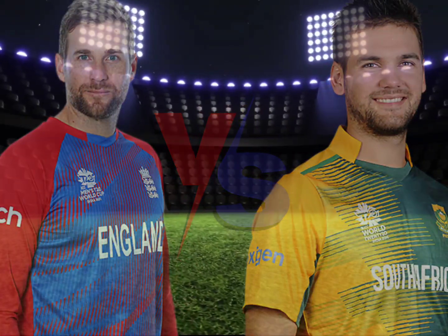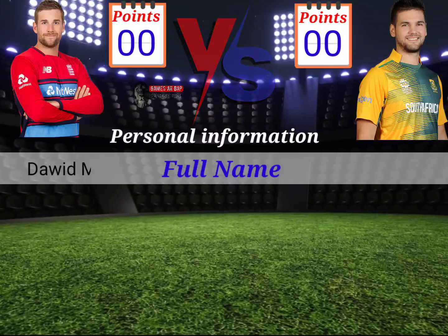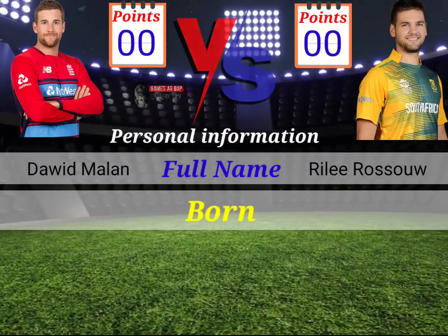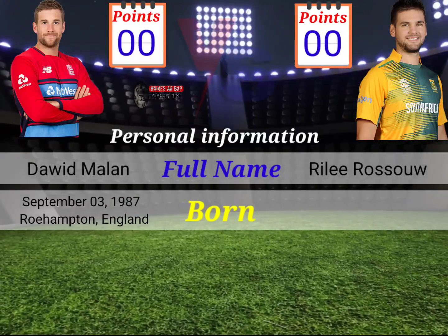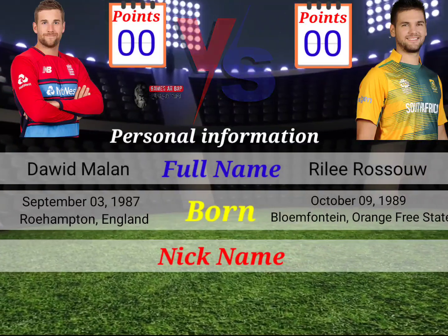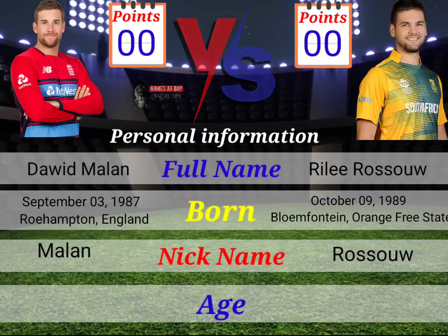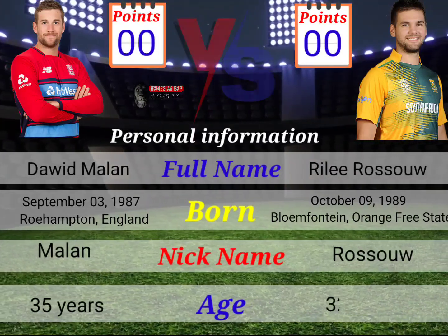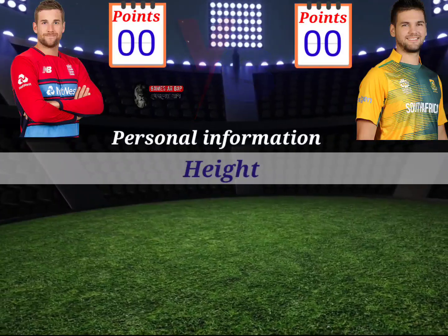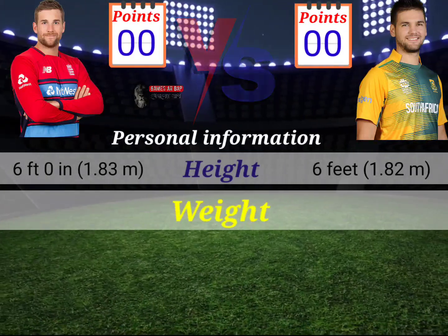Who is the best cricketer? Personal information: full name — Pawn. Nickname — Ace. Hide Wade.